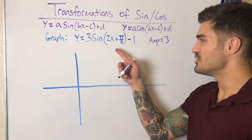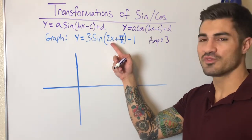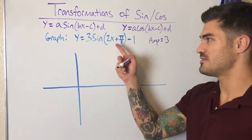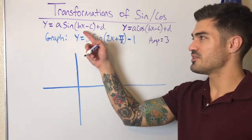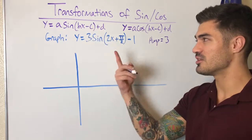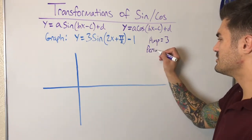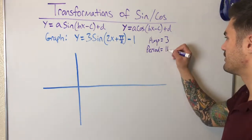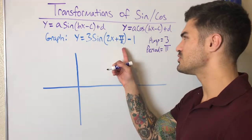Now let's look at the period. The period has changed because I have a two in front of the x. The period is normally two pi for sine and cosine, but when we have a number b in front of x, we divide two pi by that number to get our new period. So the new period is two pi over two, which is just pi.